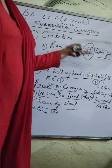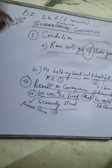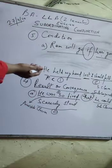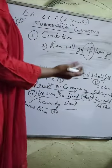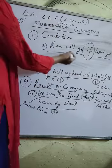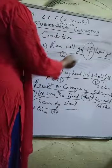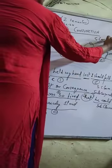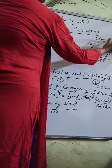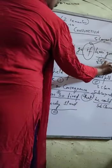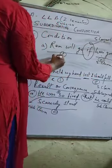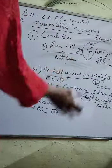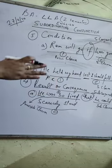स्टार्टिंग में ही जब आपको example बताया था — if, where, while — यह सारे जितने भी चीज़ें हैं वो हमारा subordinating conjunction के अंदर आता है. आप पिछले वाले वीडियो को जरूर देखिए. 'Ram will go' is one simple sentence; 'Hari goes' is also a simple sentence. 'If' is the subordinating conjunction here, and the sentence attached with it becomes the subordinating clause, and the sentence before it becomes the principle clause. यह हमारा condition है — जब राम जाएगा तभी हरी भी जाएगा.